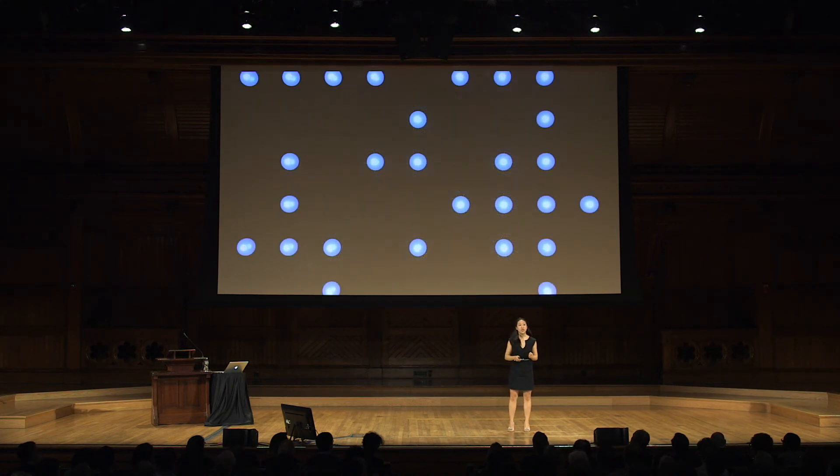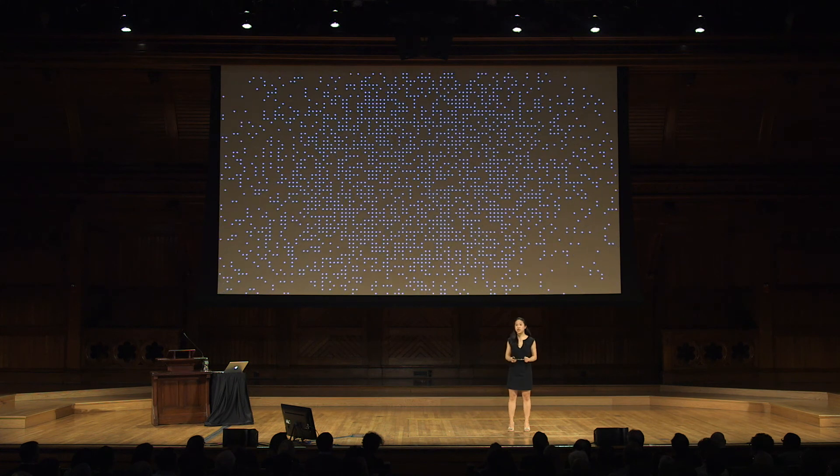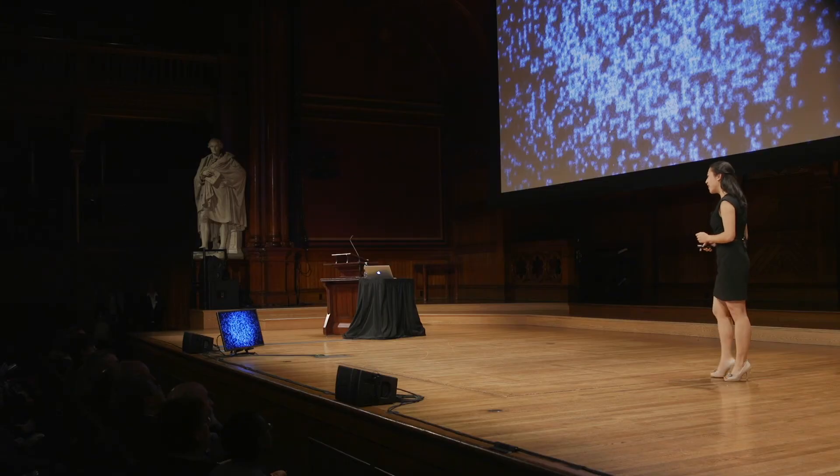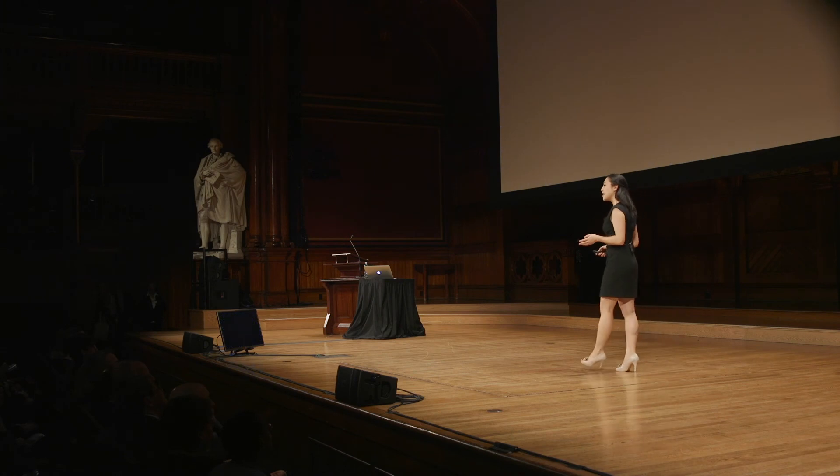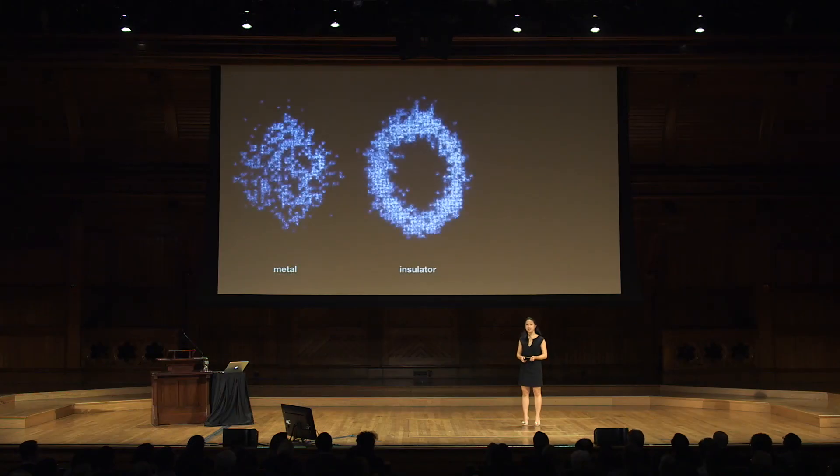We can then take a high resolution picture of where they all are to read out information from our model. Here's one image I took — a raw picture straight from my experiment. Each of these blue dots is an atom, and they're all sitting perfectly within our grid. Patterns within these pictures tell us how our atoms behave. The presence of certain patterns confirmed that we can make our atoms behave as electrons do in familiar materials such as metals or insulators. The presence of another pattern was the signature that we could make our atoms behave as electrons do in one type of strongly correlated material called the anti-ferromagnet.